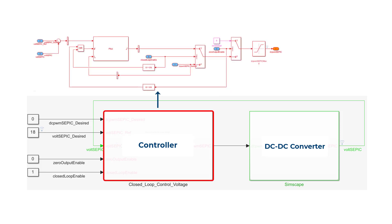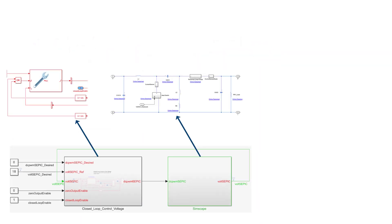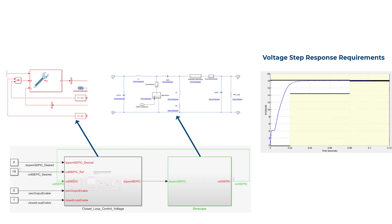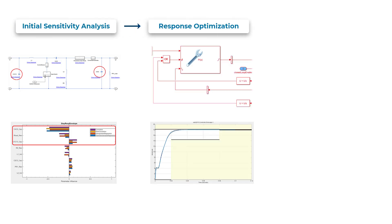In this video, we'll see a workflow for designing a digital controller for a DC-DC converter that satisfies design requirements while being robust to variations in passive component values. More specifically, we'll look at how to tune our controller for a SEPIC circuit such that it meets the voltage step response requirements even when the passive component values of the circuit vary outside the nominal values. The workflow we'll follow is to use sensitivity analysis to identify passive components of the SEPIC converter that have the highest impact on voltage requirements being satisfied, then use response optimization to tune the controller values while accounting for variations in the identified influential parameters, thereby streamlining the optimization process and minimizing the number of required evaluations.